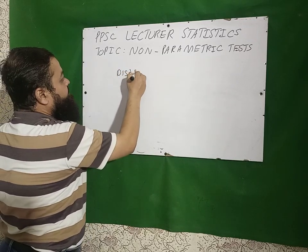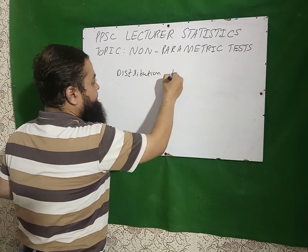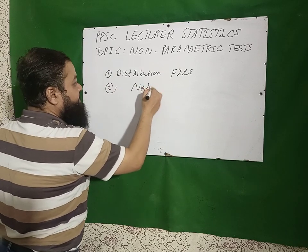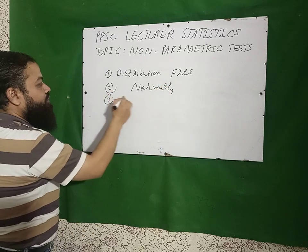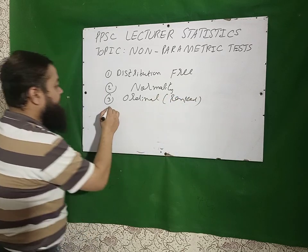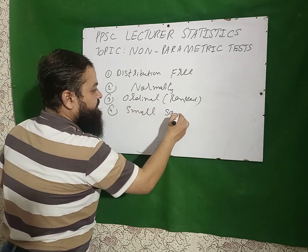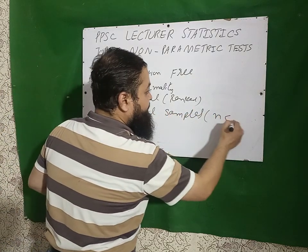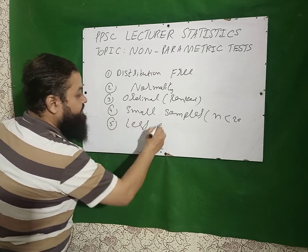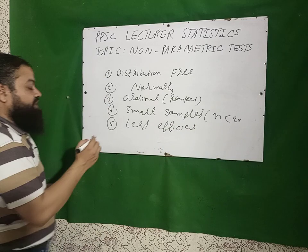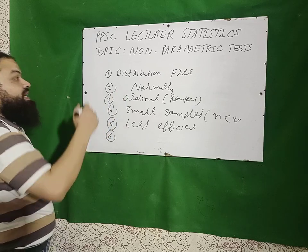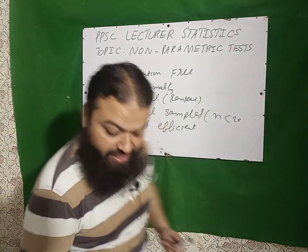Non-parametric tests are also called distribution-free tests. They do not have the condition of normality. They are used for ordinal data and ranked data. They are used for small samples — when the sample size is less than 20, we use non-parametric tests. Non-parametric tests are less efficient compared to parametric tests because they do not use all the information contained in the sample as parametric tests do.